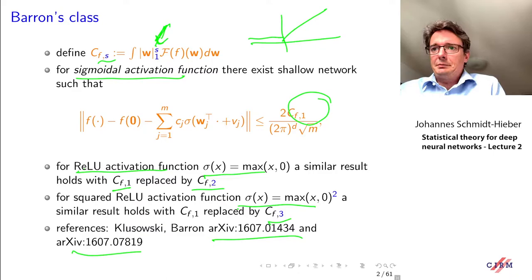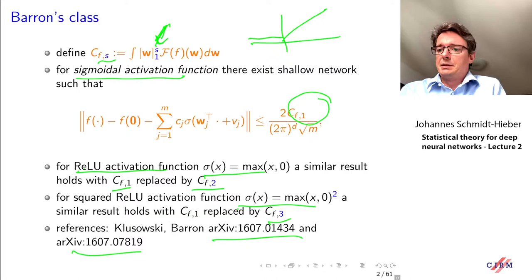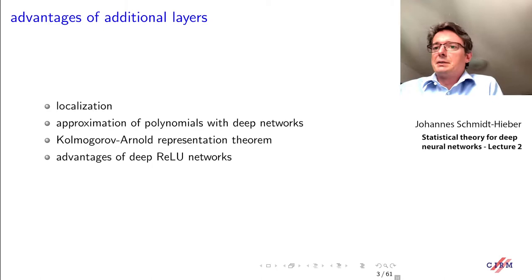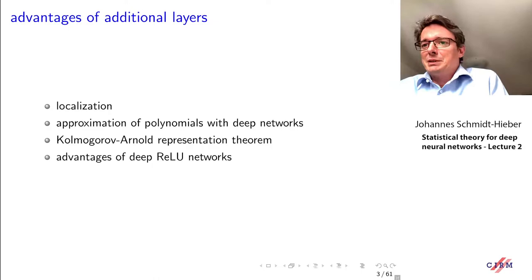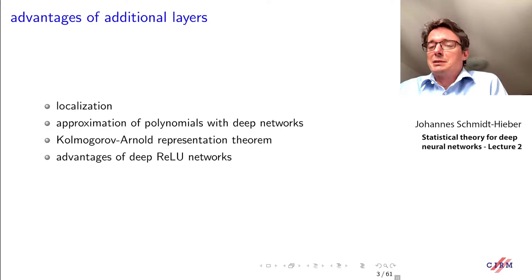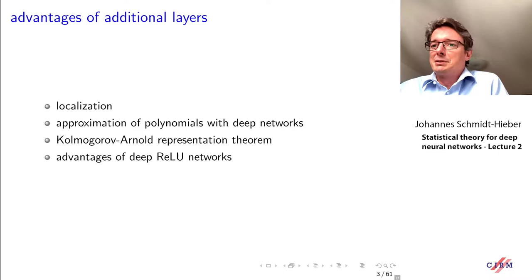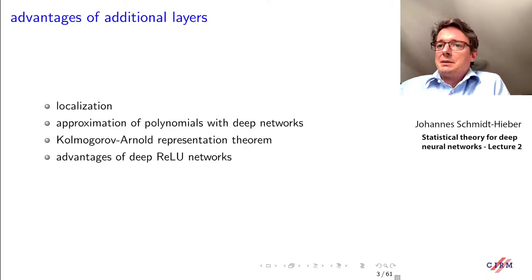That's a small update from yesterday's discussion. Today I want to move to the next topic: why additional hidden layers in neural networks are useful, and why deep neural networks are better than shallow neural networks. Deep neural networks perform quite well, and we want to understand what the difference is. We look first from a function space perspective, then later from a statistical theory perspective.